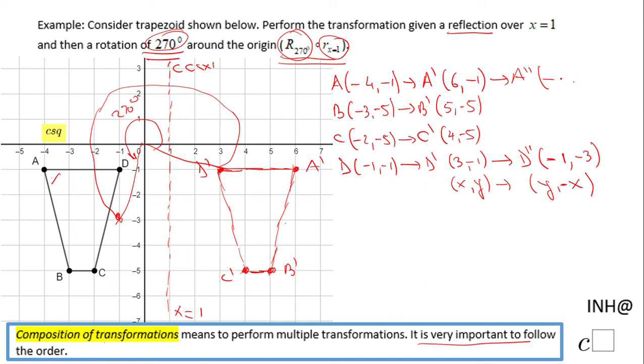I'm gonna switch x and y. B double-prime, the same story - switch x and y, so we have negative 5 and 5, also change the sign, that's what this rule said. And the last one, C double-prime, switch x and y, and one more time change the sign. And now we have the coordinates of the final trapezoid.